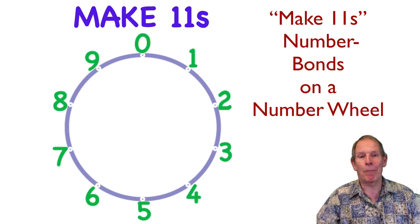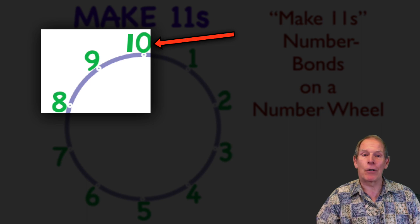Now, a number wheel is great because 8-9-10, that 0 up on top is also 10, so 10 plus 1 is 11.